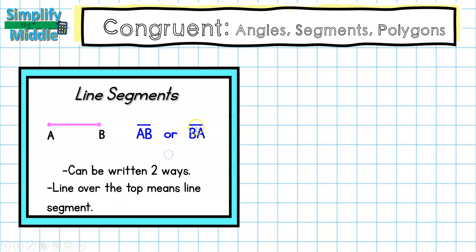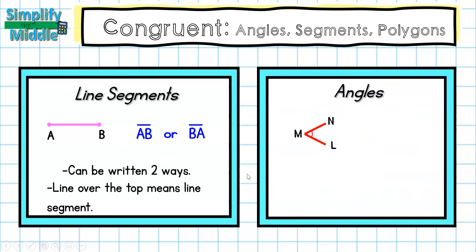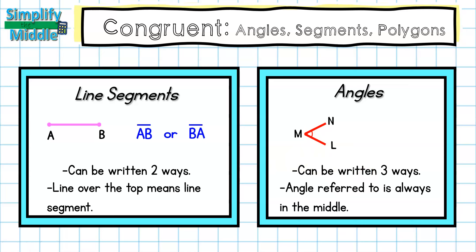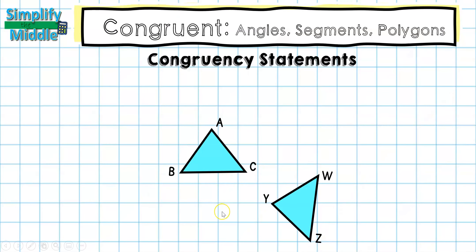To identify angles, we're going to talk about how they are written in three ways. The angle referred to is always in the middle. So for this one, I can write the measure of angle M — this symbol means the measure of angle. Then I can follow some direction: going from the bottom, the measure of angle LMN, or from the top, the measure of angle NML. The middle letter always identifies the angle.